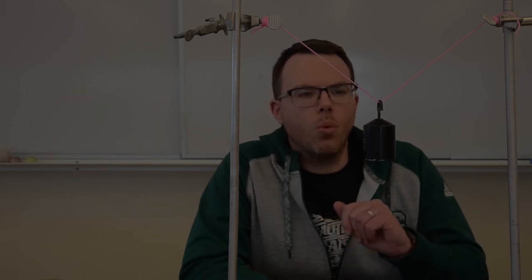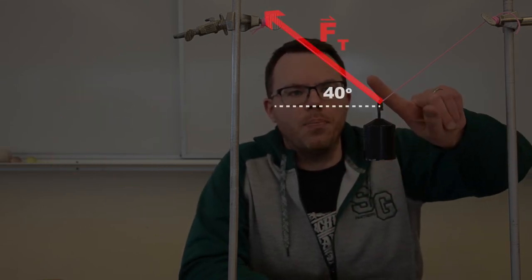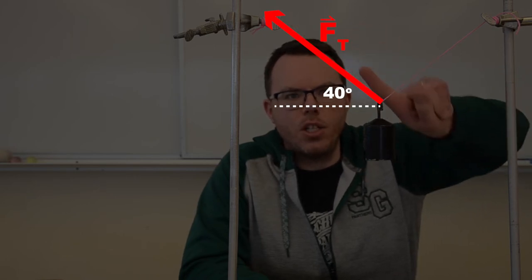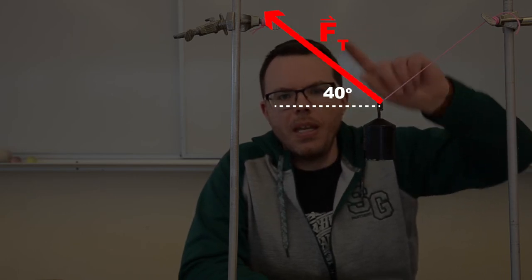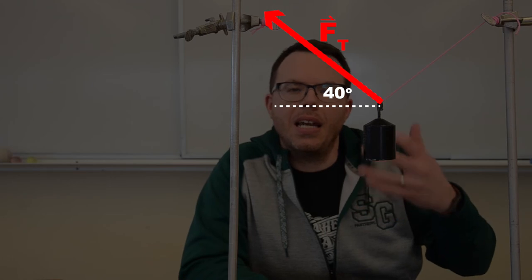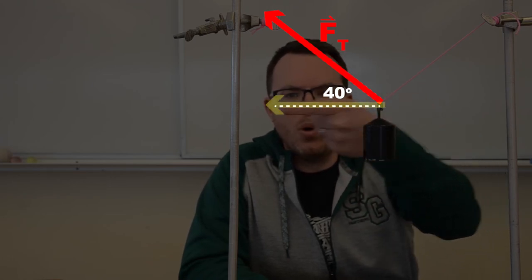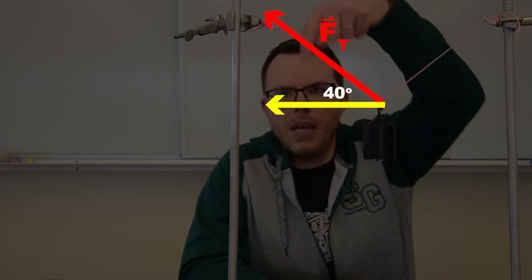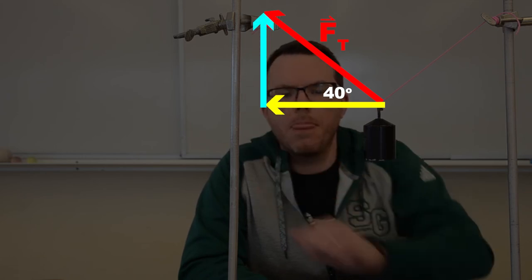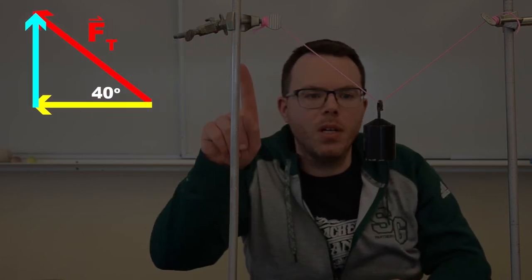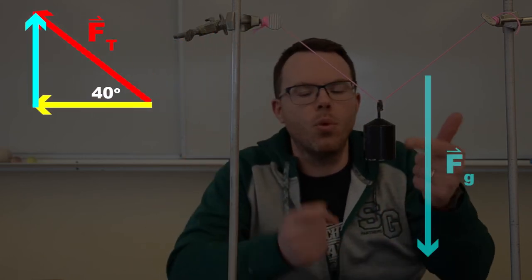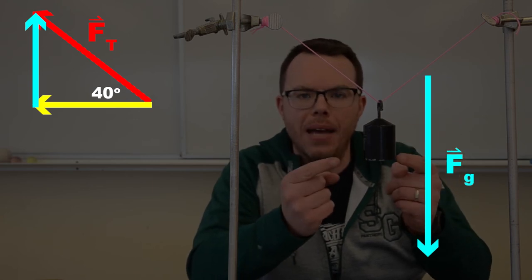Think about just one of those two ropes. I know I have a force of tension acting in the diagonal, and I can break that force of tension into two components. One component here going horizontally and one going up vertically. Now that component going up vertically is going to take half of the weight or half of the force of gravity of this mass.